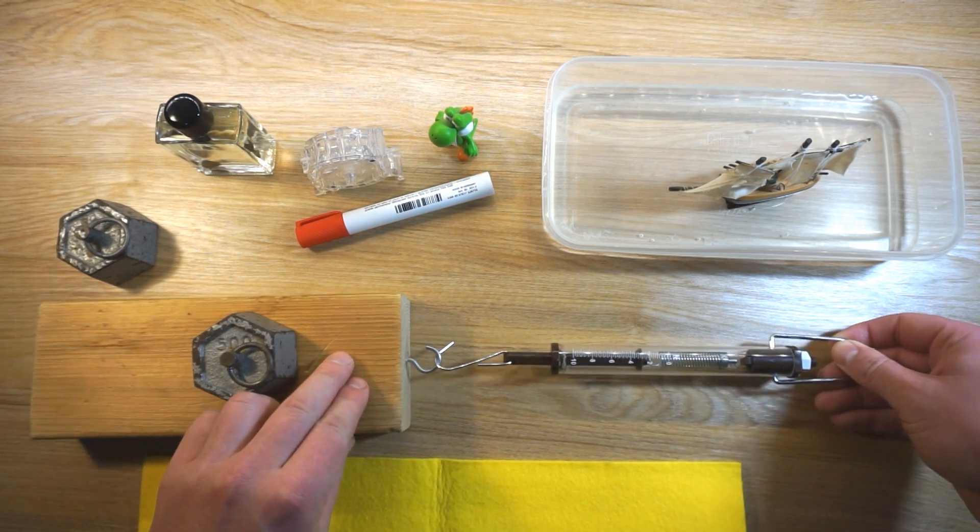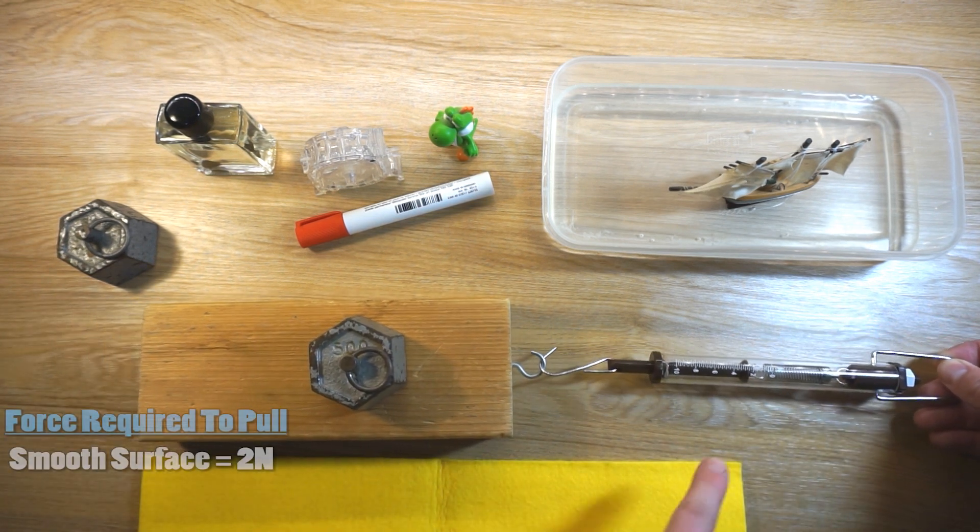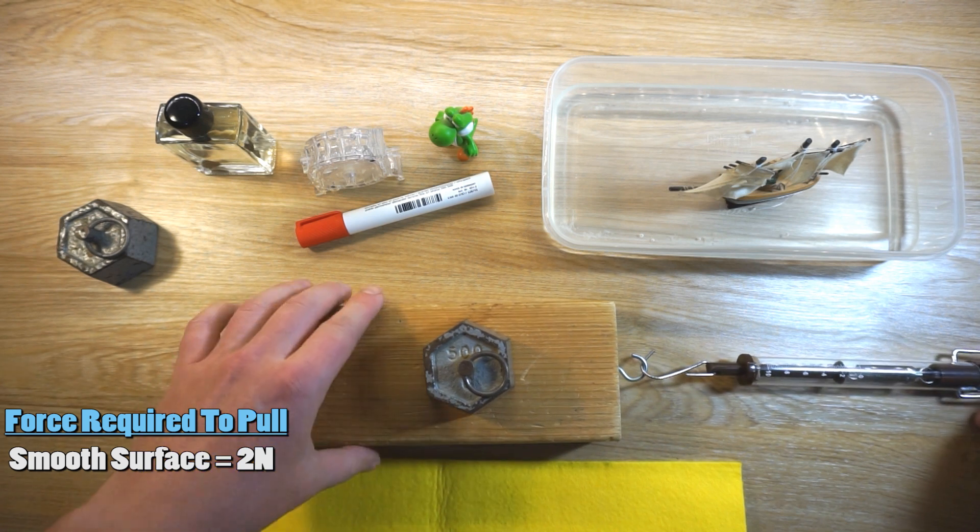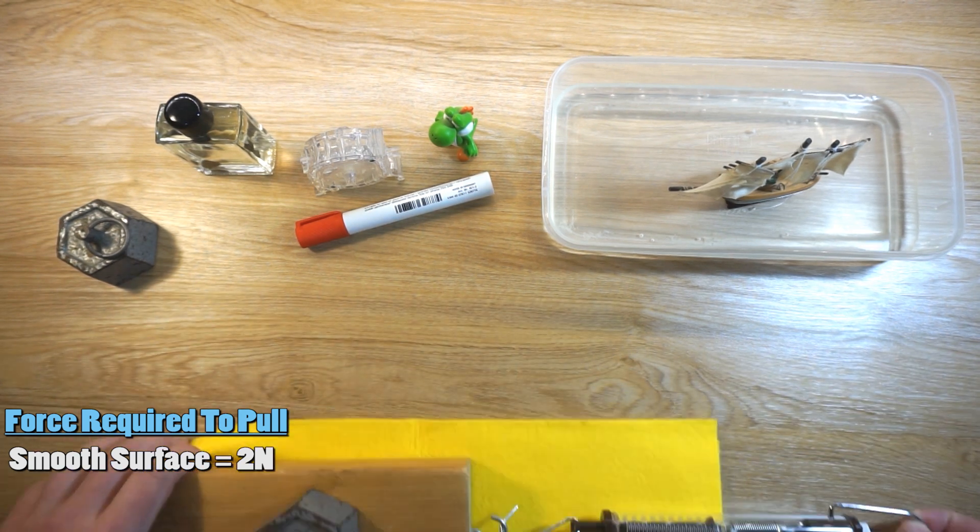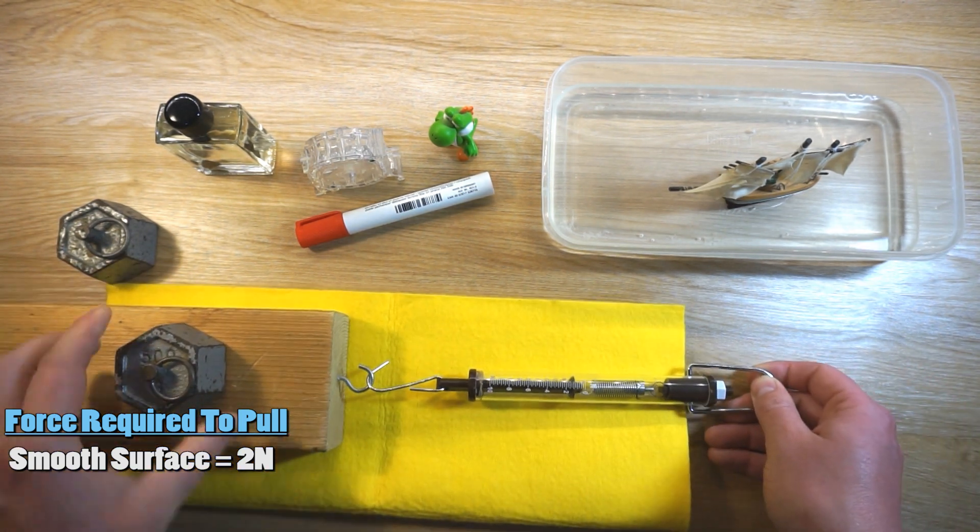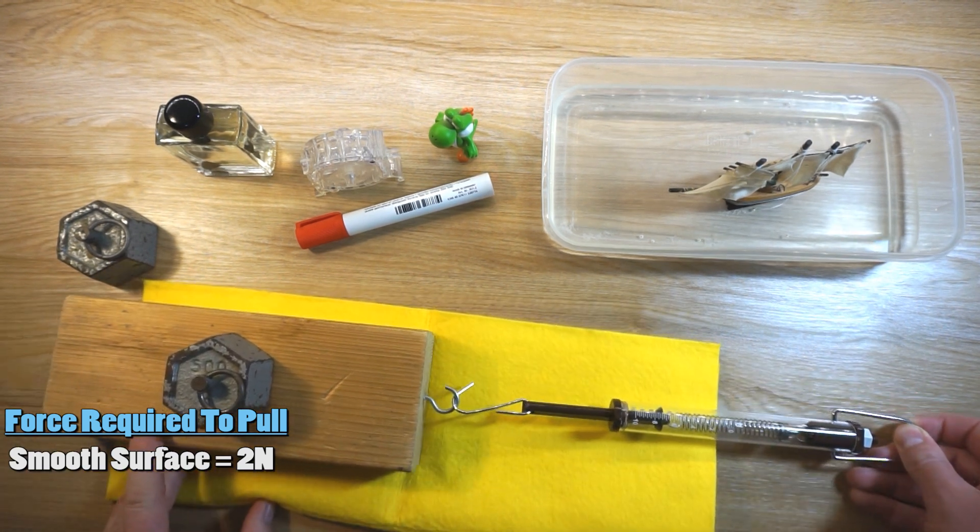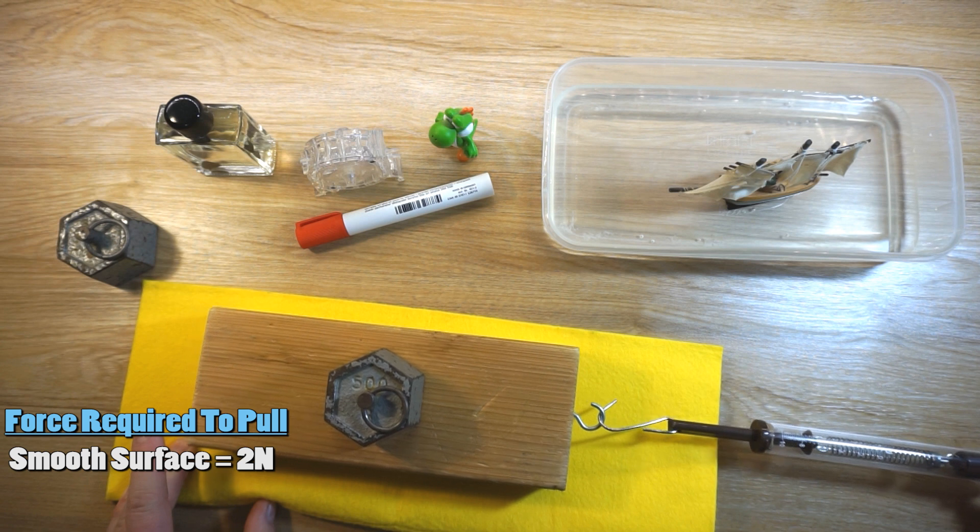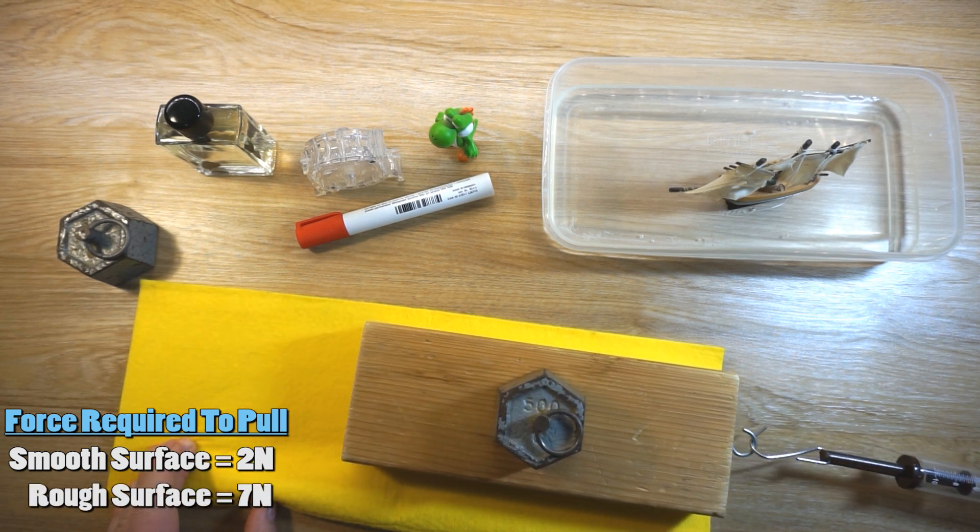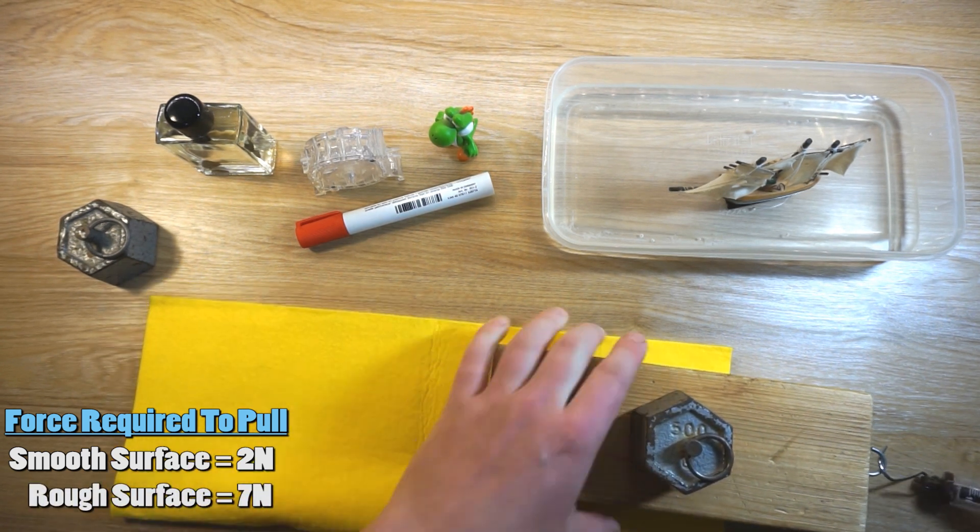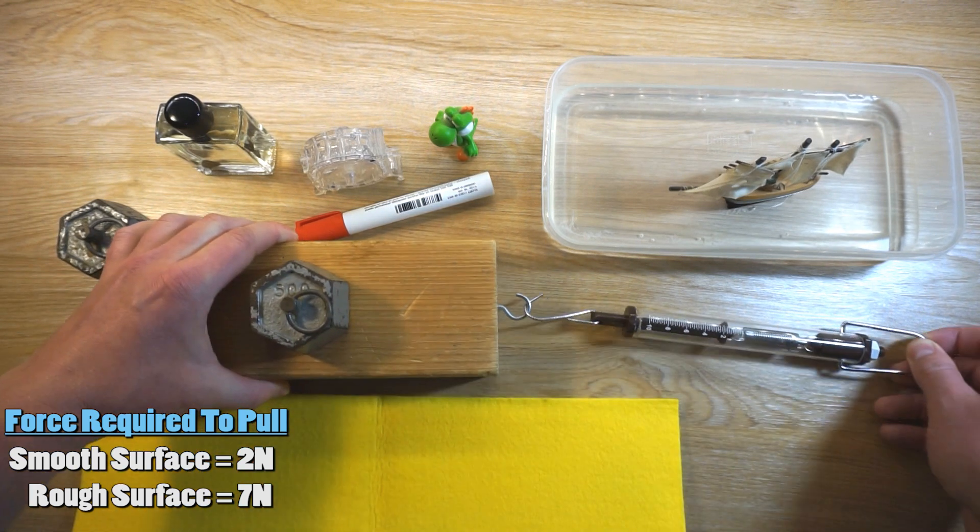So firstly, pulling this block along the smooth surface takes about 2 newtons of force. Let's set this up now on our rough surface, the felt, and we can see that now it takes about 7 newtons of force to pull it, which is a lot more force than what was required on our smooth surface, and that's because the rough surface is providing that increased amount of friction.